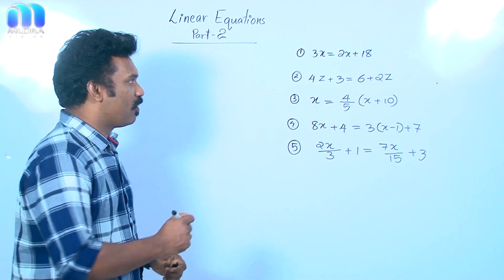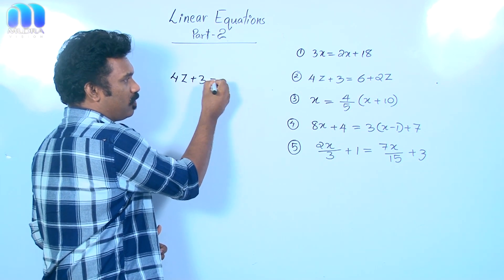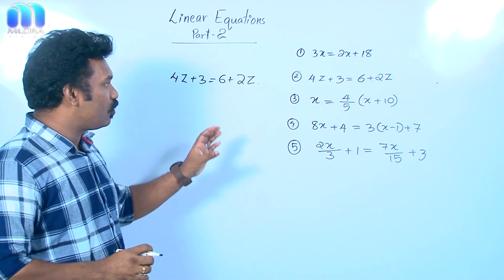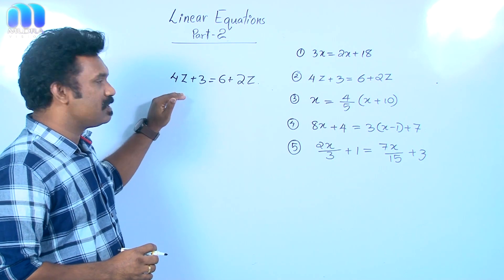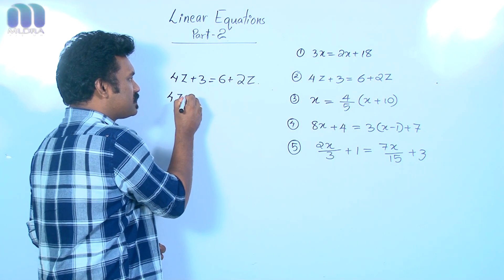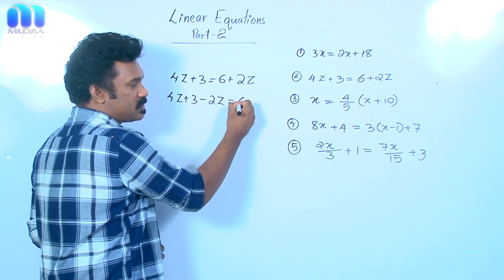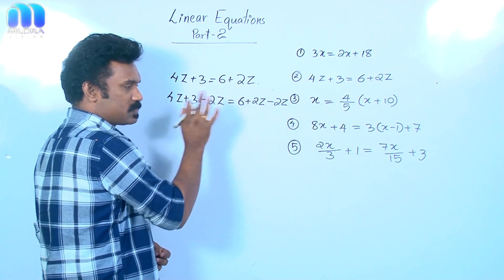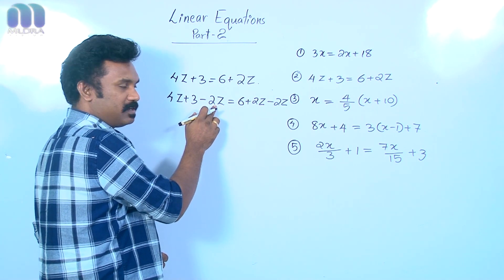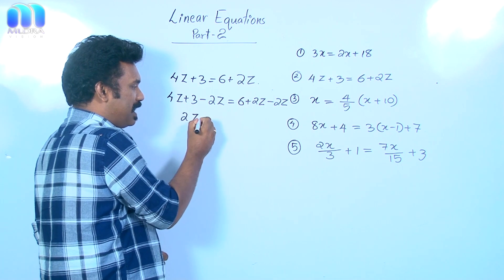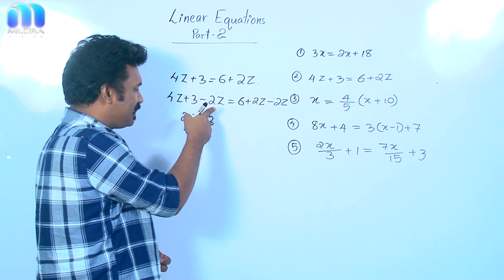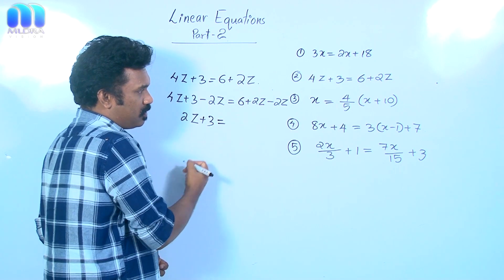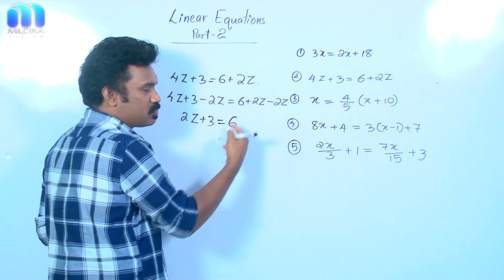Now let us see the second question: 4z plus 3 equal to 6 plus 2z. To solve this equation we have to subtract 2z from both sides. Subtracting 2z from both sides: 4z plus 3 minus 2z equal to 6 plus 2z minus 2z. I have subtracted 2z from both sides. Now, 4z minus 2z is 2z, plus 3 should be there, equal to 6 — and 2z minus 2z becomes 0.